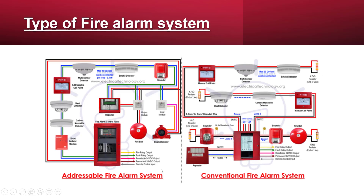What is the type of fire alarm system? The two main types of fire alarm systems are conventional and addressable. Both systems communicate with devices similarly; however, they are unique in how they are connected.